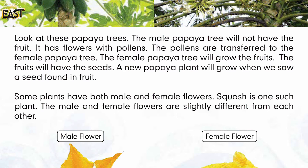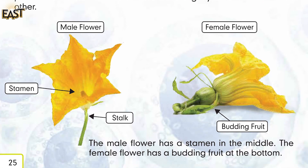Some plants have both male and female flowers. Squash is one such plant. The male and female flowers are slightly different from each other — repeat. The male flower has a stem in the middle — repeat this sentence.